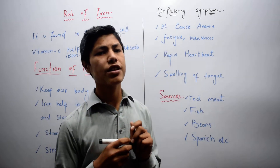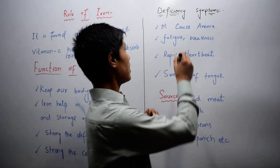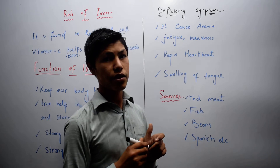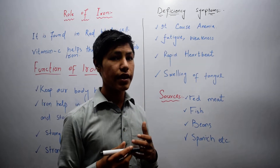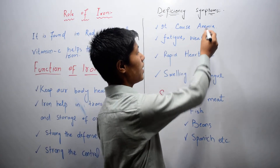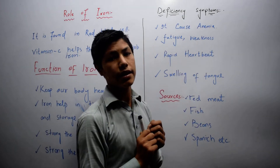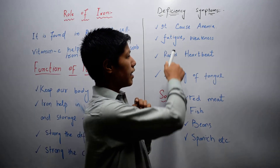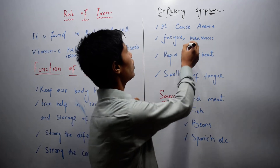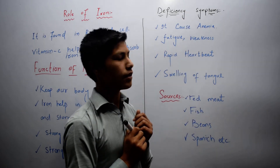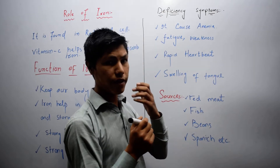Now, what are the deficiency symptoms if there is a low level of iron? It causes anemia in the human body. Anemia is a disease in which the oxygen levels in the blood are low. A low level of iron also causes fatigue, weakness, rapid heartbeat, and swelling of the tongue.